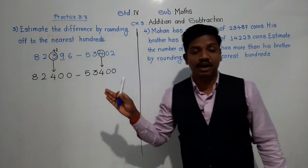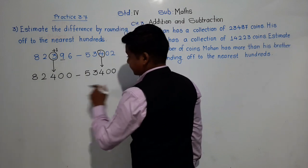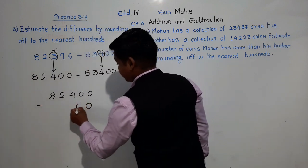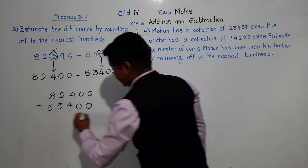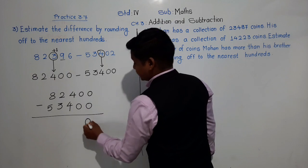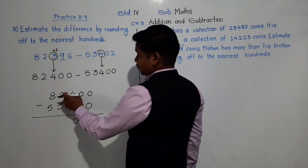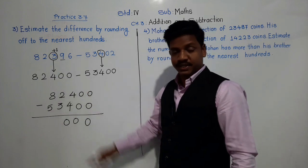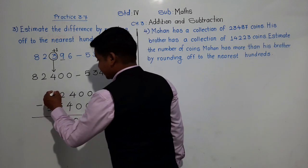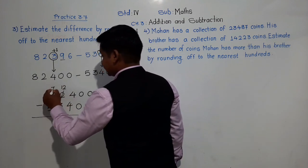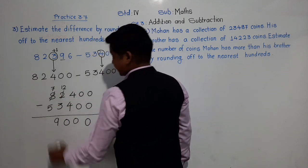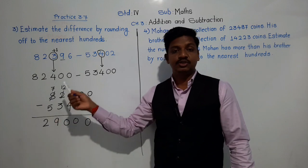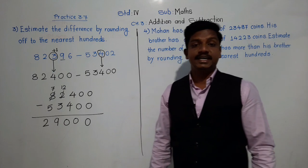Now both numbers have been rounded to the nearest 100. We will find the difference: 82,400 minus 53,400. Subtracting: 0 minus 0 is 0, 0 minus 0 is 0, 4 minus 4 is 0. For 2 minus 3, since 2 is smaller than 3, we take a borrow from the next place — 8 becomes 7, and 12 minus 3 is 9. Then 7 minus 5 is 2. So the estimated difference is 29,000.